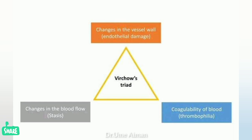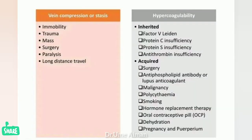This is the most important component to remember in deep vein thrombosis. Vein compression or stasis includes immobility, which may be due to trauma, masses, surgery, paralysis, and long-distance travel. Long periods of hanging legs causes stasis of blood flow.